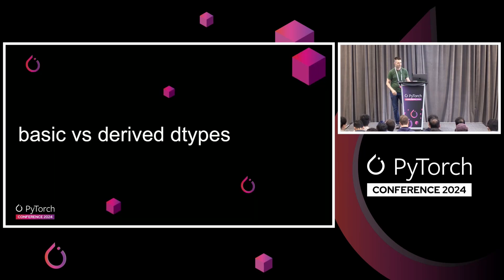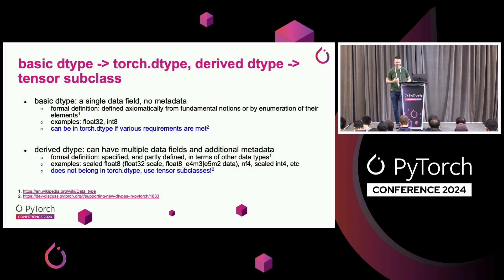First, let's set the stage and talk about what is a basic dtype and what is a derived dtype. A basic dtype is essentially one you can describe with a single thing — you don't need multiple things and you don't need any metadata. Some examples of basic dtypes, which all tend to be in Torch dtype, are Float32, Float16, BFloat16, and various integer types and booleans.